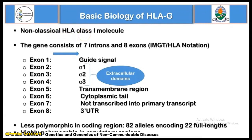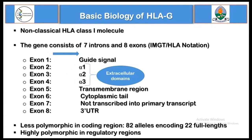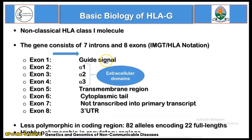The gene for HLA-G contains eight exons and seven introns, with exons two, three, and four encoding the extracellular domains of the transmembrane HLA-G protein — specifically the alpha-1, alpha-2, and alpha-3 domains. Exon five encodes the transmembrane HLA-G protein, and exon seven is not transcribed into the primary transcript, while exon eight makes the 3' untranslated region. Exon one encodes the signal peptide that directs transportation of the synthesized HLA-G protein.